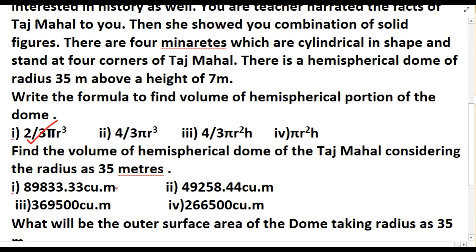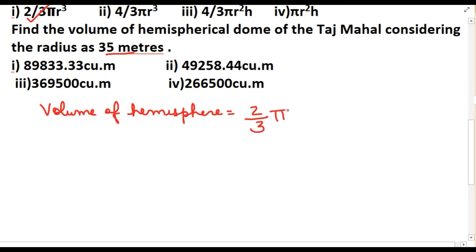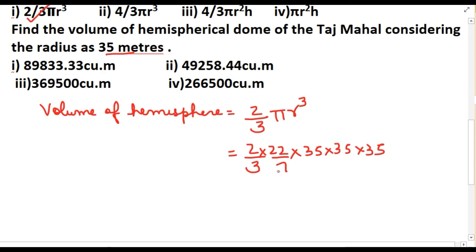Volume of hemisphere = (2/3)πr³. Substituting the values: (2/3) × (22/7) × 35 × 35 × 35. Cancelling 7 with 35, we get 2 × 22 × 5 × 35 × 35 divided by 3, which equals 89,833.3 cubic meters. So this is the volume of the hemispherical dome of the Taj Mahal.